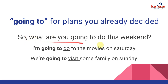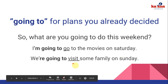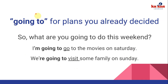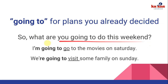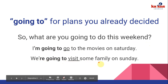In the question 'What are you going to do this weekend?' there are two options: 'I'm going to go to the movies on Saturday' or 'We're going to visit some family on Sunday.' We use going to because we already have a plan — we made a decision and we're very sure we're going to do that activity.